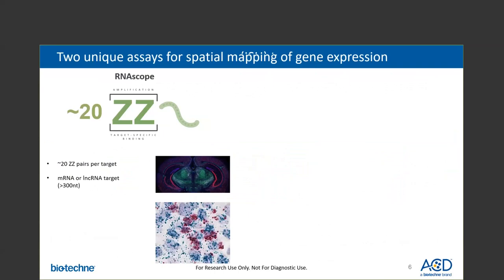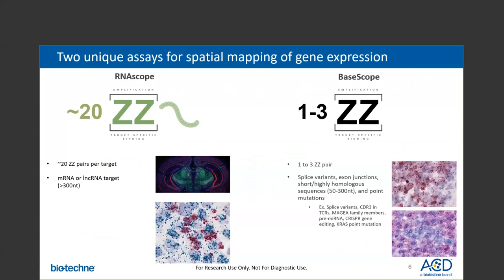ACD's technology includes two unique assays to detect RNA in tissue contexts at single-molecule sensitivity with single-cell resolution. First, RNAscope is designed to detect mRNAs or non-coding RNAs that are greater than 300 nucleotides in length, with probes designed in about 20 ZZ probe pairs. On the other hand, the BaseScope assay is specifically designed to support the detection of splice variants, short and highly homologous sequences, and point mutation applications.